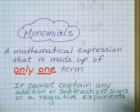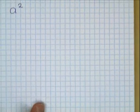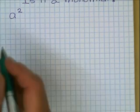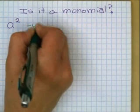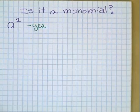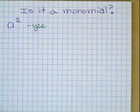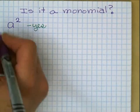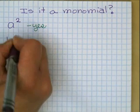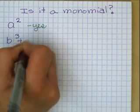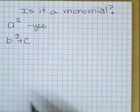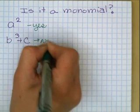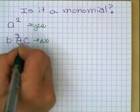Let's look at a few examples. a to the second power, is this a monomial? Yes it is, because it does not have any negative exponents or addition or subtraction terms. How about the second example, b to the third plus c, is that a monomial? No, it's not, because it has an addition sign in it.